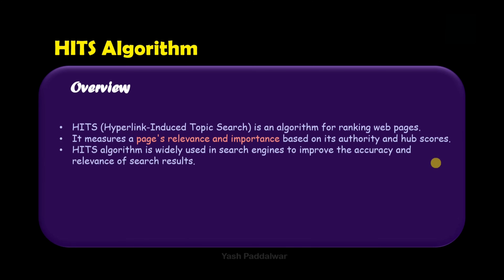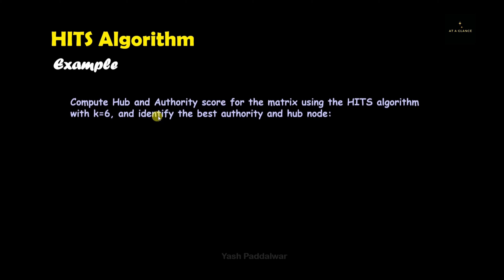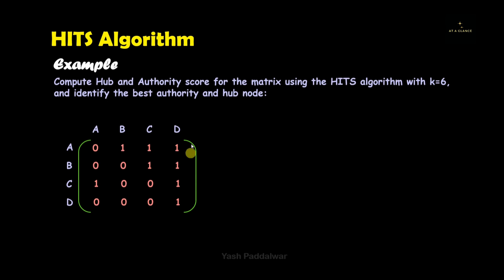Now we'll look at an example showing how the HITS algorithm finds hub and authority scores and identifies the best hub and authority node. The example asks us to compute the hub and authority score for a given matrix using the HITS algorithm. The k value is given as 6, which is the number of iterations to perform. Based on the hub and authority scores we need to identify the best hub and authority node. The matrix is four-by-four because there are four nodes, and each entry is either zero (no link) or one (a link).